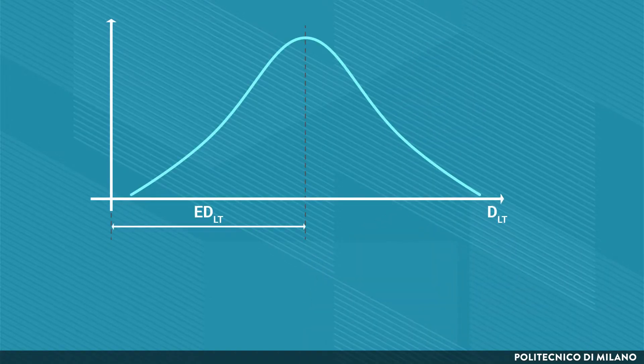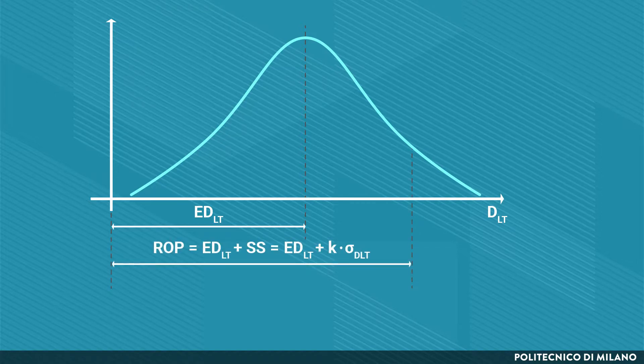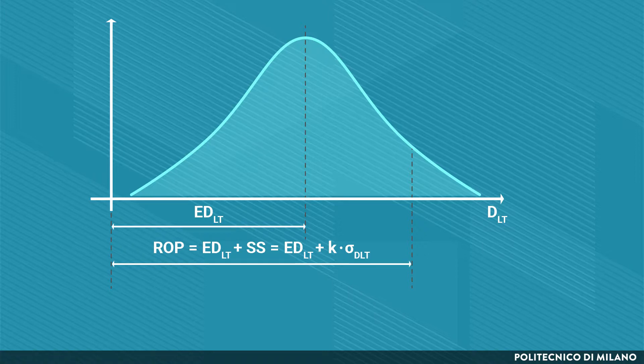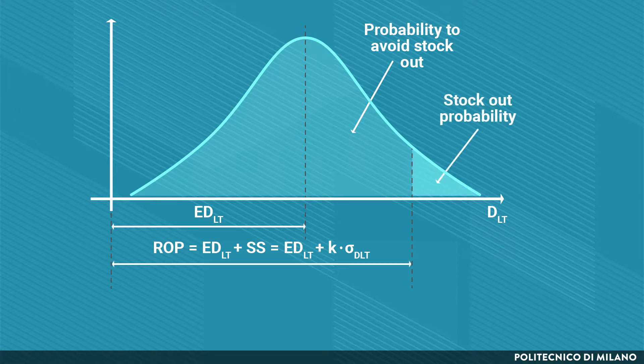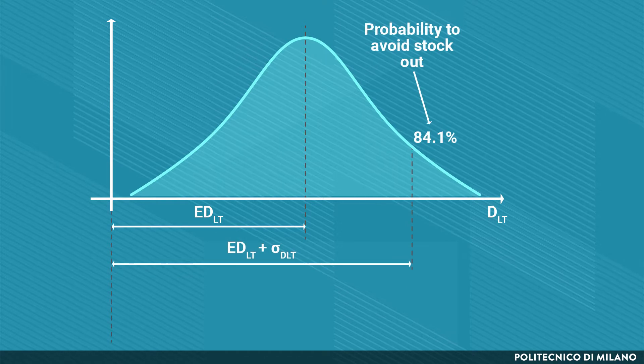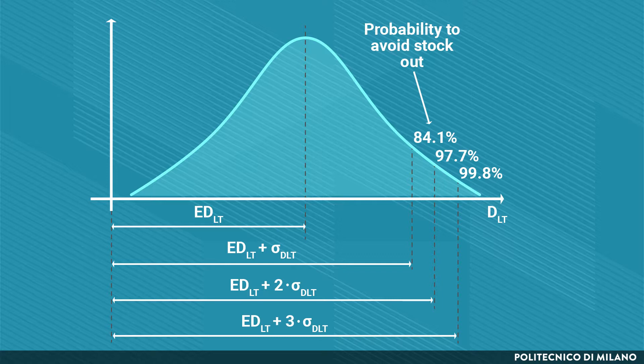Let's start by considering the service level as the probability to avoid the stockout during the lead time. The assumption is that the demand during the lead time can be represented through a normal distribution with an average value and a standard deviation. In the graph, we can see the value of the expected demand during the lead time and the reorder point quantity. Since the area under the curve represents the probability of occurrence of a certain demand value, when the demand is higher than the reorder point, there is a stockout. The area under the curve for values lower than the reorder point represents the probability to avoid stockout, while the opposite area represents the stockout probability. The reorder point quantity is the sum of the expected demand during the lead time and the safety stock. Therefore, by increasing the safety stock level, the probability to avoid the stockout increases as well.